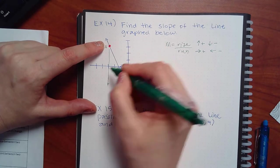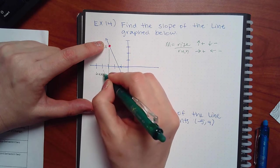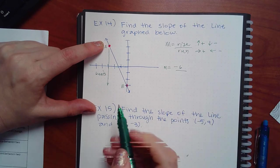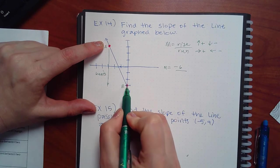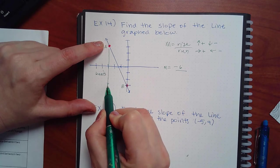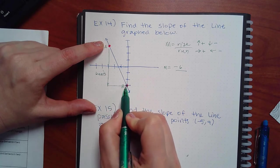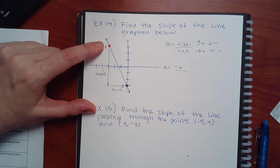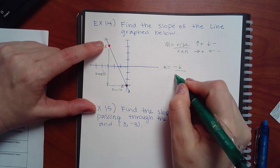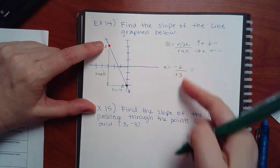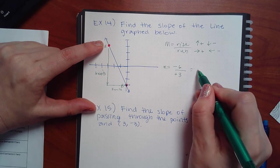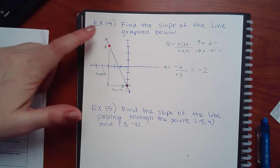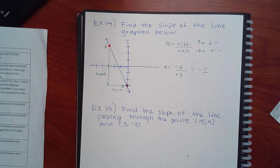Going down six units means negative six. Then I still have to get over to B, so I go one, two, three units to the right — that's positive three. When I reduce negative six over positive three, I get negative two. So the slope is negative two.